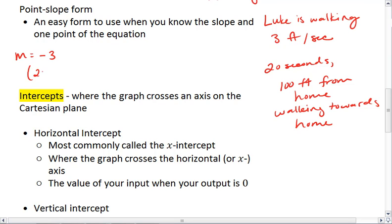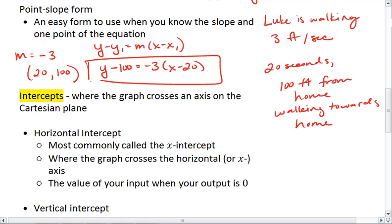We also know that we have the ordered pair (20, 100). From this information, we can use the point-slope form. We get y minus 100 equals negative 3 times (x minus 20), and that is our linear equation in point-slope form.